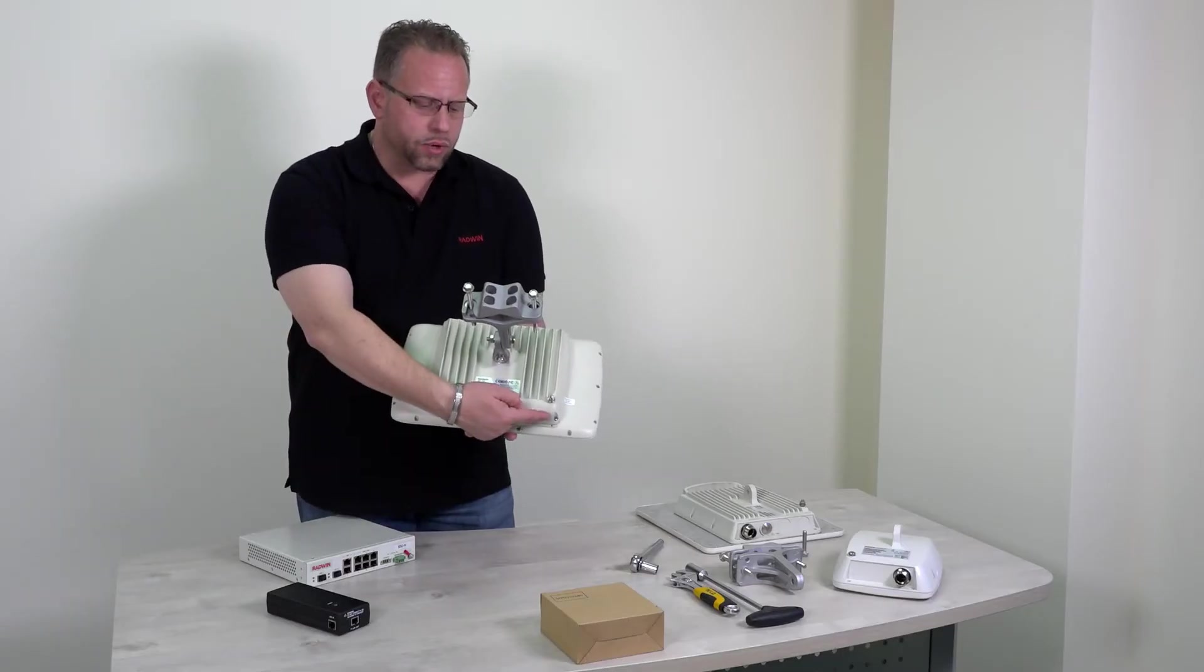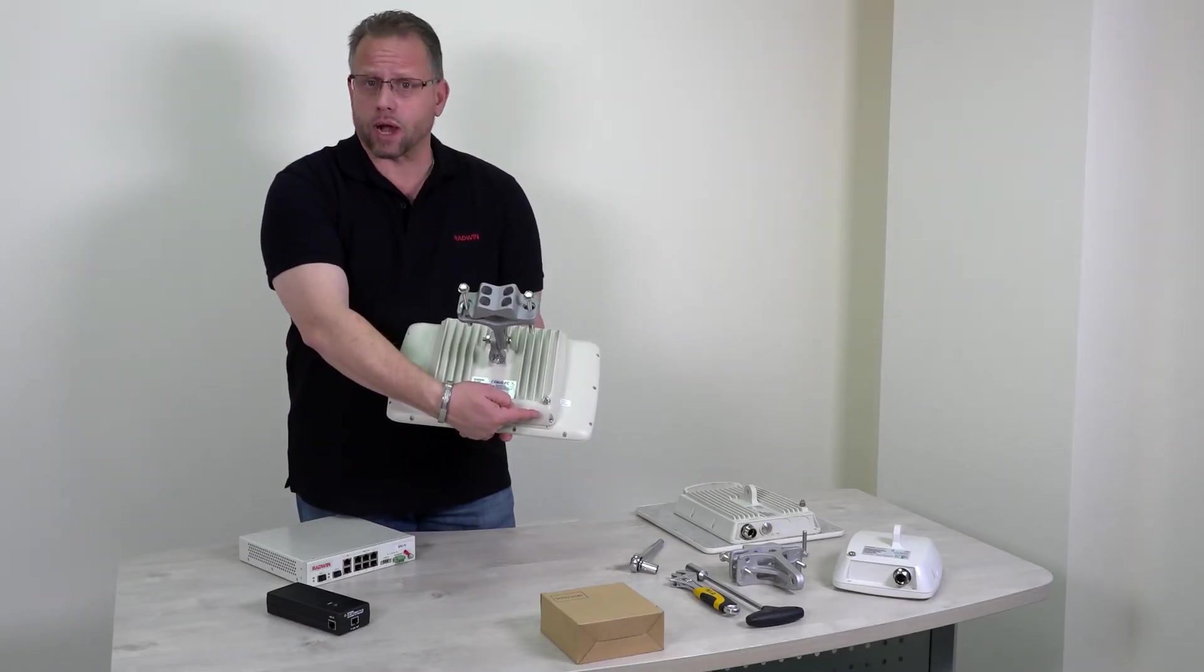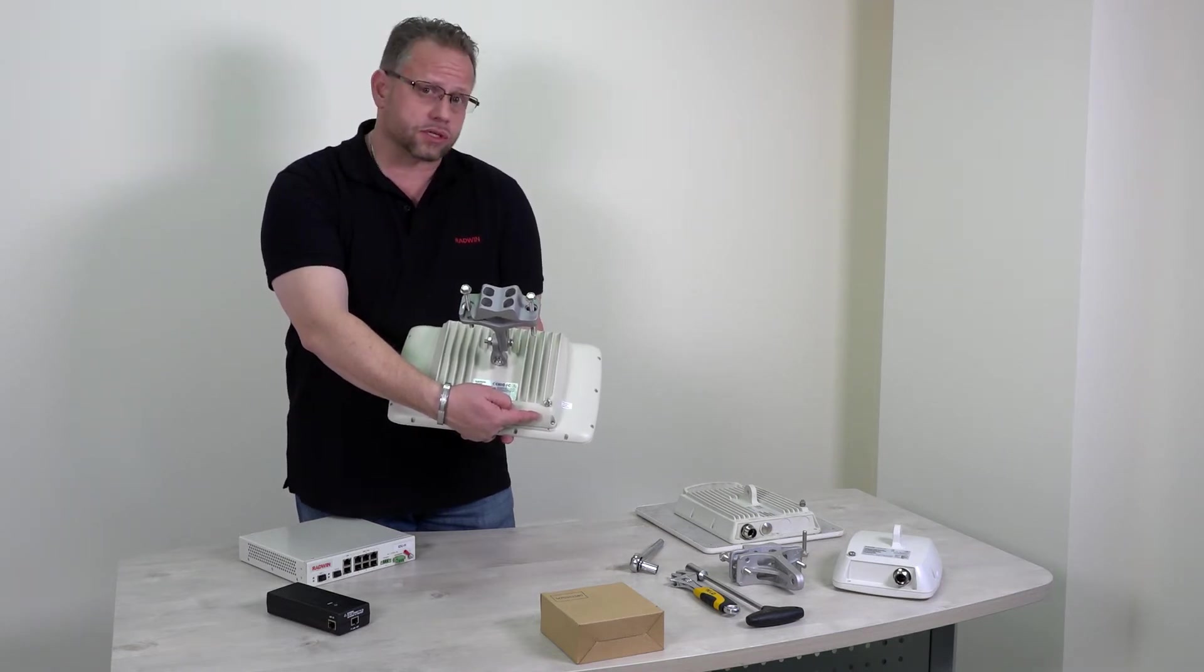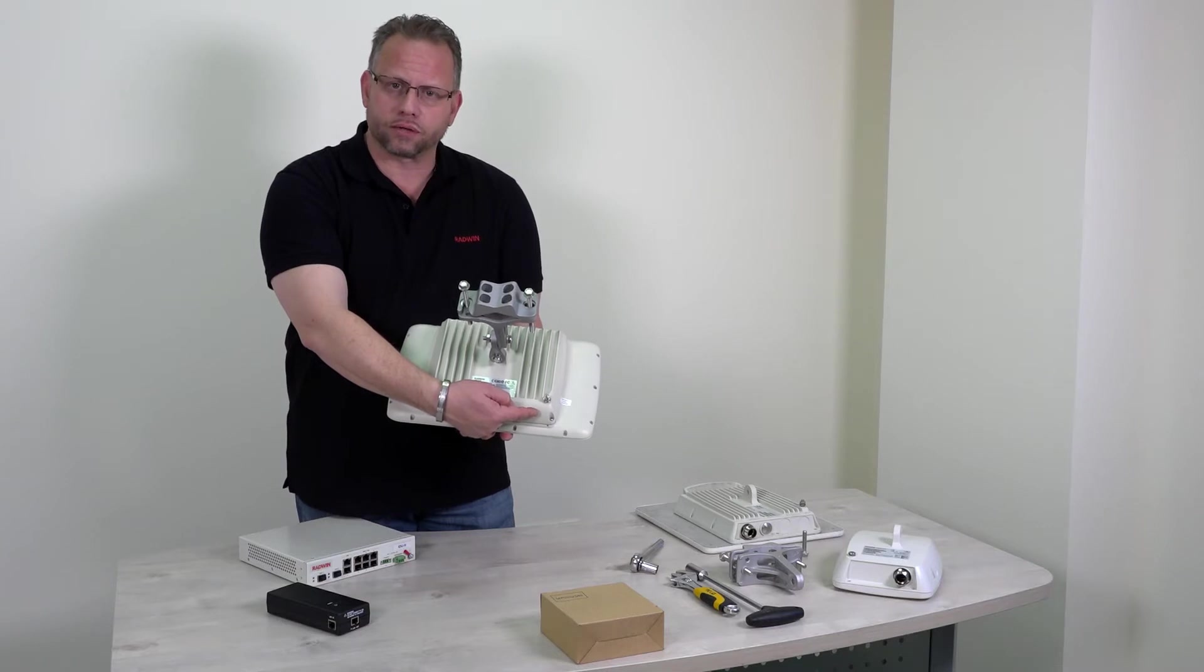Every Radwin device comes with a ground screw. This ground screw is necessary so that you can shunt any unwanted frequencies to ground and protect your unit.